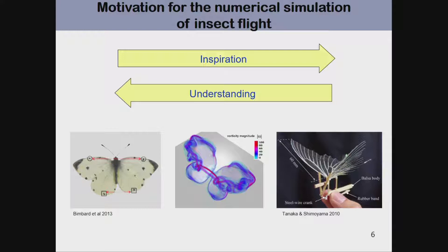There are two communities now interested in understanding how insects fly. First, biologists, because the behavior, morphology, and evolution of insects can be partly explained by their flight. On the other hand, roboticists are trying to build biomimetic micro air vehicles, which in turn help understand how animals fly. In both cases, it is important to understand the fluid flow past flapping wings — and that is primarily my interest.